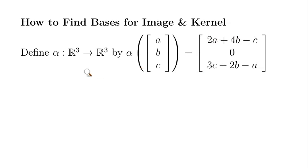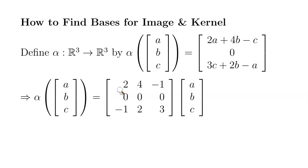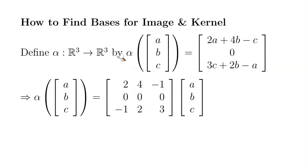First I'm going to look for a corresponding 3x3 matrix for this linear transformation, which is going to look something like this. This matrix multiplication does exactly the same thing as applying the linear transformation. You can double check — the 2a plus 4b minus c is exactly the same as the first component. The negative 1a and 2b and 3c is the same as the third component. So this 3x3 matrix corresponds to this linear transformation alpha.